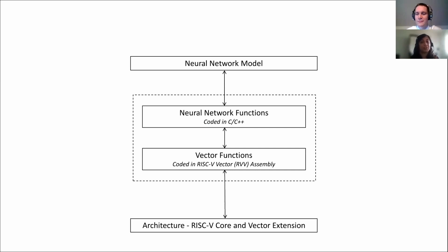The AI accelerator design started with choosing an instruction set extension to implement. There were two options: the first is to start from scratch with new instructions, and the other is to choose the necessary instructions from existing extensions. The first option is best if we want to design instructions tailored to a specific application, however it takes a lot of design effort. It also requires further work to integrate these instructions into the assembler.